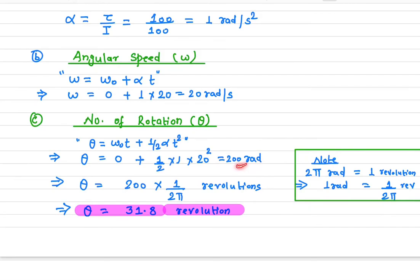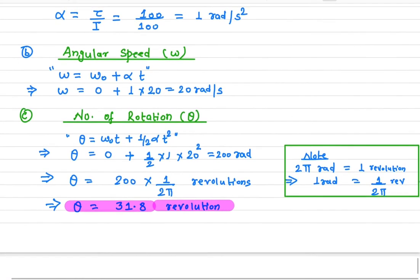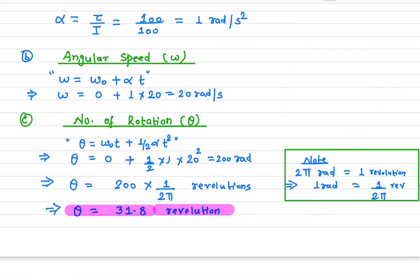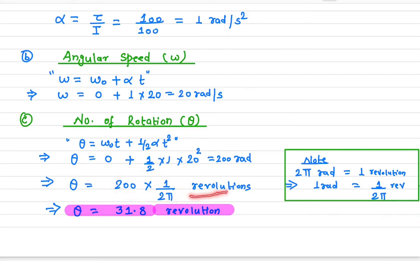We now convert 200 radians into the number of revolutions. One complete rotation equals 2π radians, so one radian equals 1/(2π) revolutions. Multiplying 200 by 1/(2π) gives approximately 31.8 revolutions.